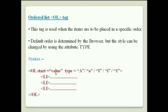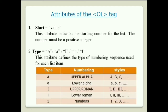The start attribute lets you begin your ordered list from a specific number. For example, if you listed items 1, 2, 3, then inserted an image, and want to continue from 3 or 4 afterwards, you use the start attribute. Start is an attribute of the OL tag — you type start equals and provide a value indicating the starting number for the list.